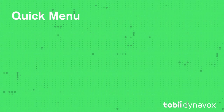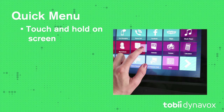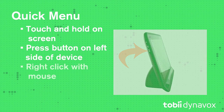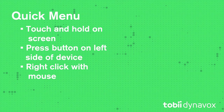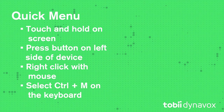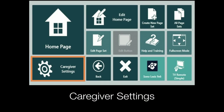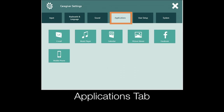In the Communicator software, you will need to access the caregiver settings in the Quick Menu. To open the Quick Menu, you can touch, hold and release anywhere on the screen or press this button on the left side of your device. You can right-click if you're using a mouse or select Control-M on the keyboard. From here, select Caregiver Settings, Applications tab, and then Mobile Phone.